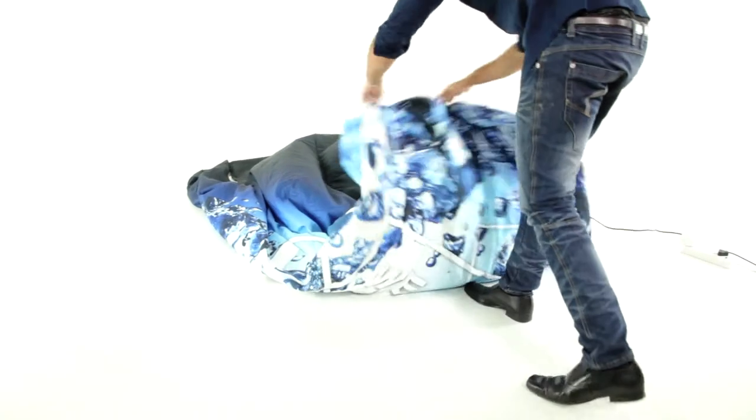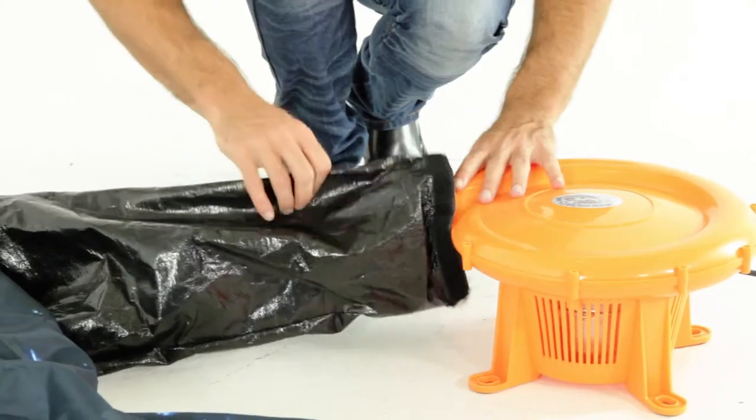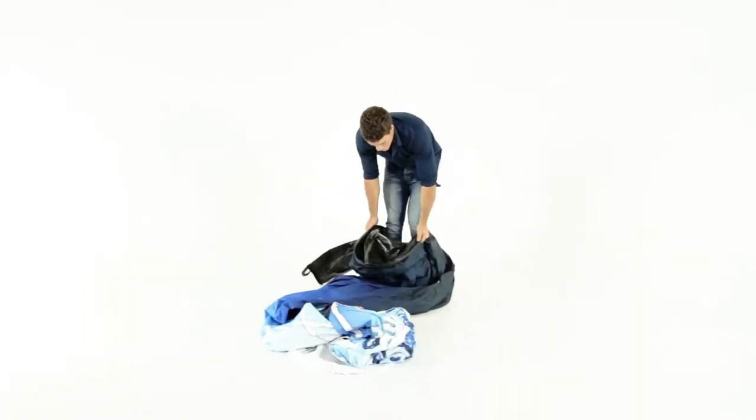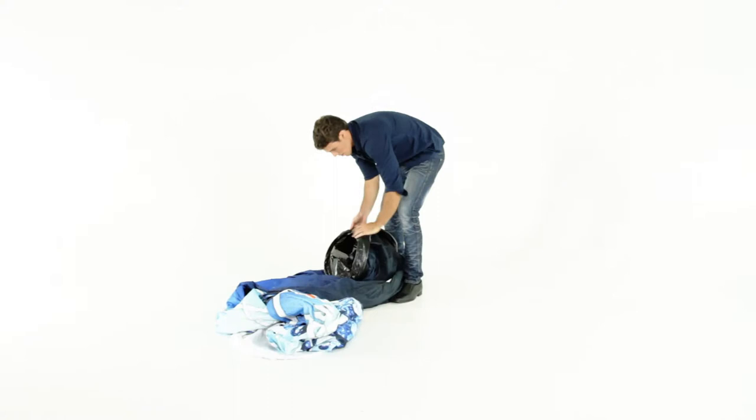Gather the fabric towards the base. Undo the velcro strap and remove the windblower. Holding the top of the base, use your other hand to press until the banner folds.